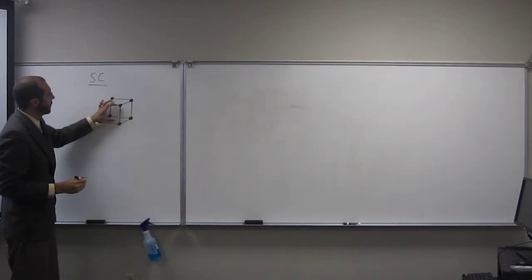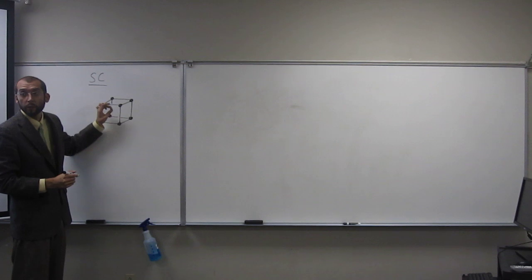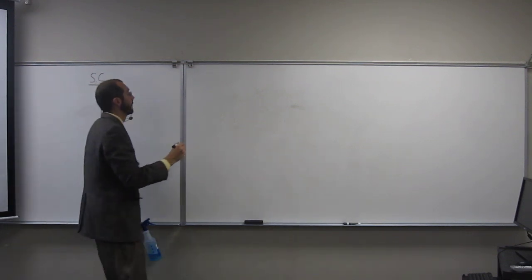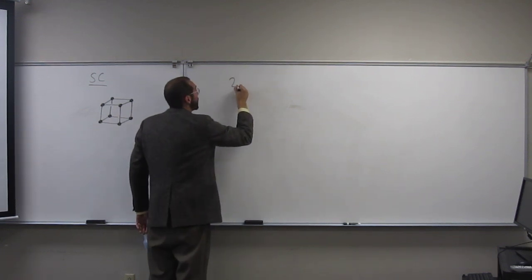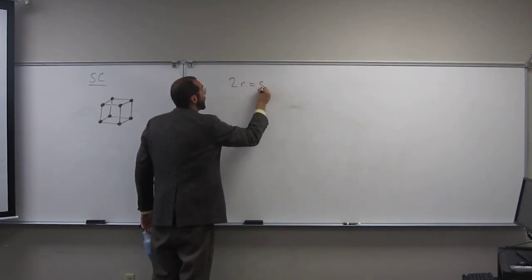So if we were to blow that part up, it would be 2r equals s. So the formula that we know for the simple cubic is 2r equals s.